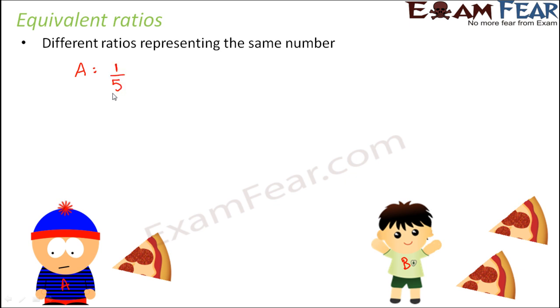That is, A ate one slice out of five slices of the pizza, whereas B ate two-fifths of the pizza—two slices out of five.